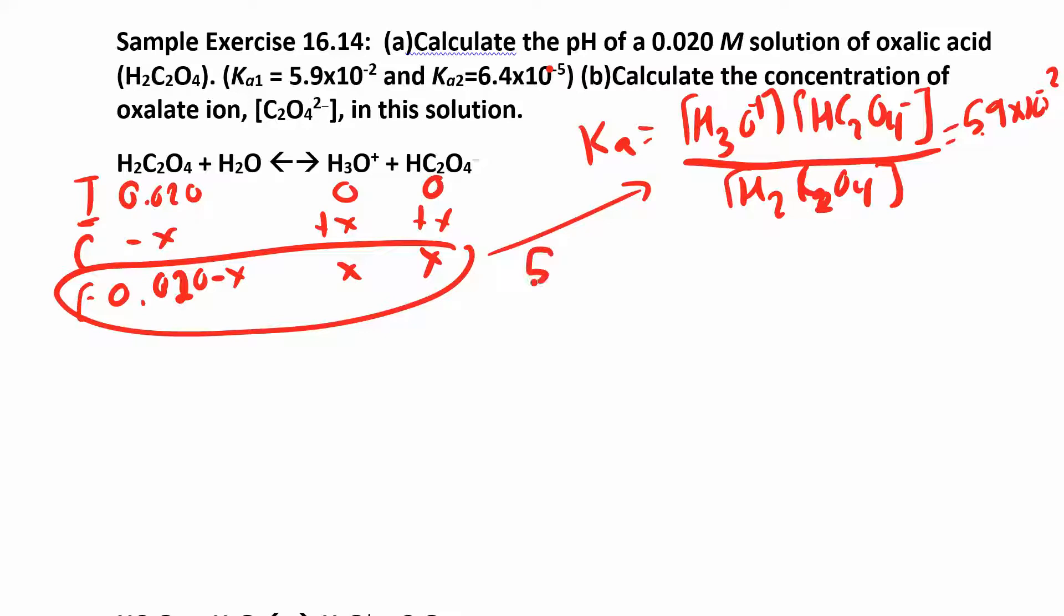Now you're going to take all of this and plug it in. So we have 5.9 times 10 to the negative 2 equals x squared over 0.020 minus x. We don't want to ignore this x because if you test it out, you'll find that the percent ionization is greater than 5%.